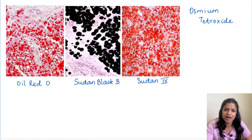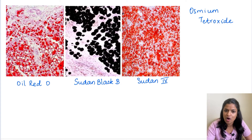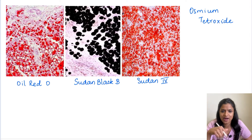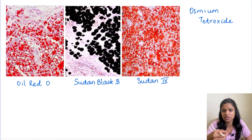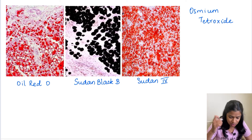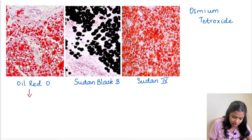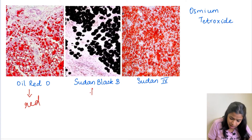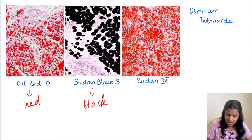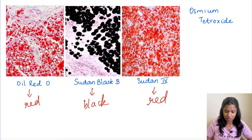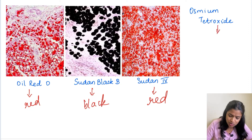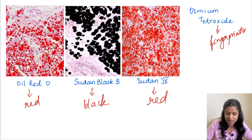Fat is basically lipid, and lipids get removed during tissue processing — so in H&E processed slides, fat appears white because it is removed. To stain fat, you need a frozen section (fresh tissue section). The fat stains used are: osmium tetroxide, oil red O, and sudan black B. Oil red O stains lipid red, sudan black B stains lipid black, and sudan IV stains lipid red. Osmium tetroxide is also used for DNA fingerprinting — an important MCQ point.